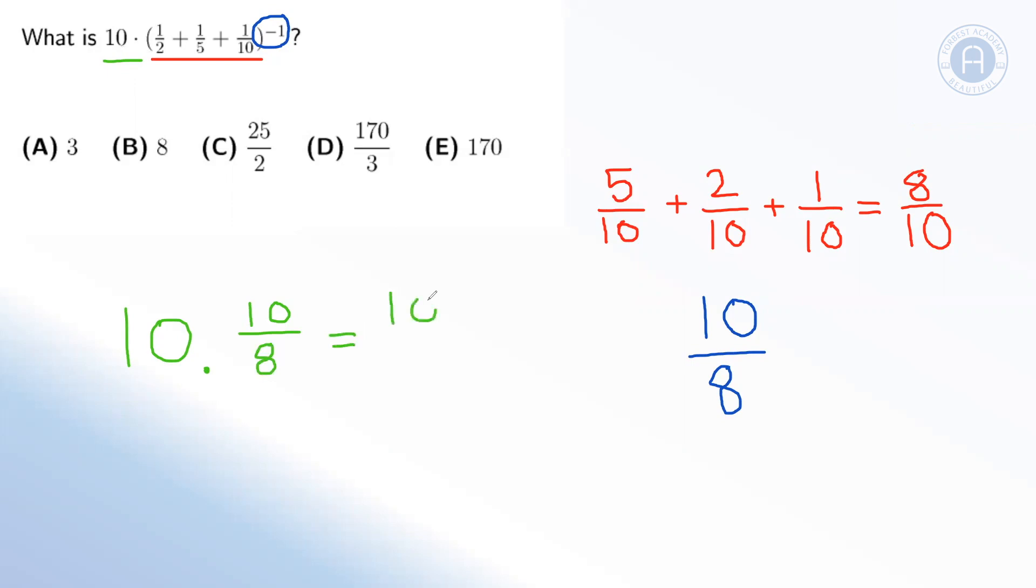We need to simplify that answer down, and we should be able to spot that both 100 and 8 can be divided by four, which will give us 25/2, which is our answer, C.